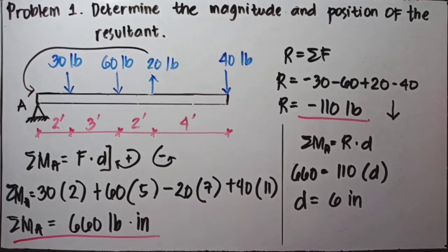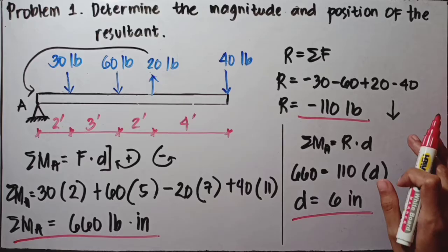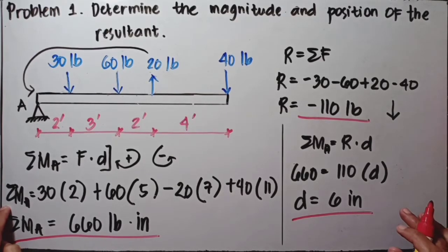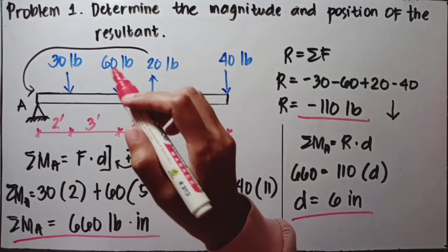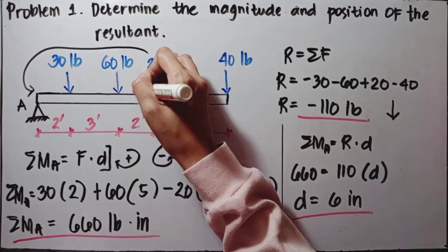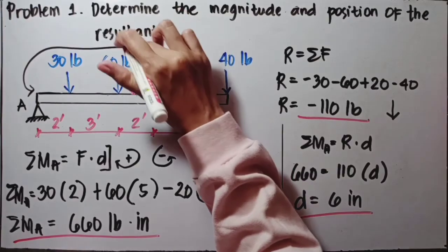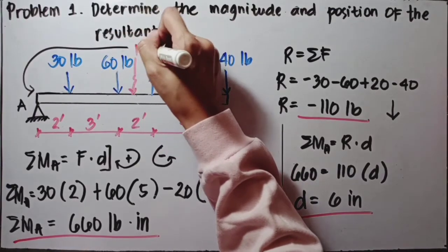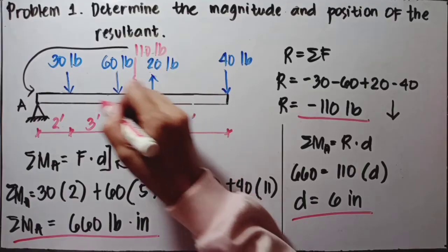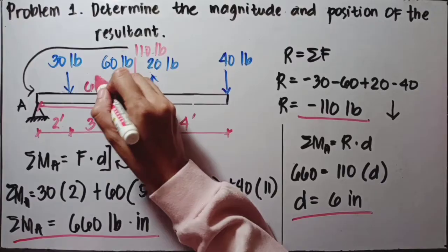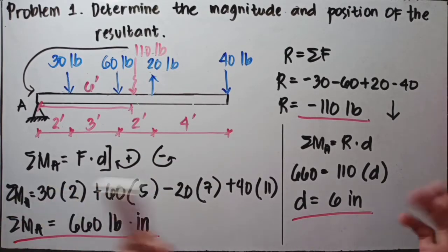According to our answer, the magnitude of the resultant is negative 110 pounds, located 6 inches from the support — since we took moments at support A. So the resultant is located approximately 6 inches from the support, with a magnitude of 110 pounds going downward. That's our answer for Problem 1.